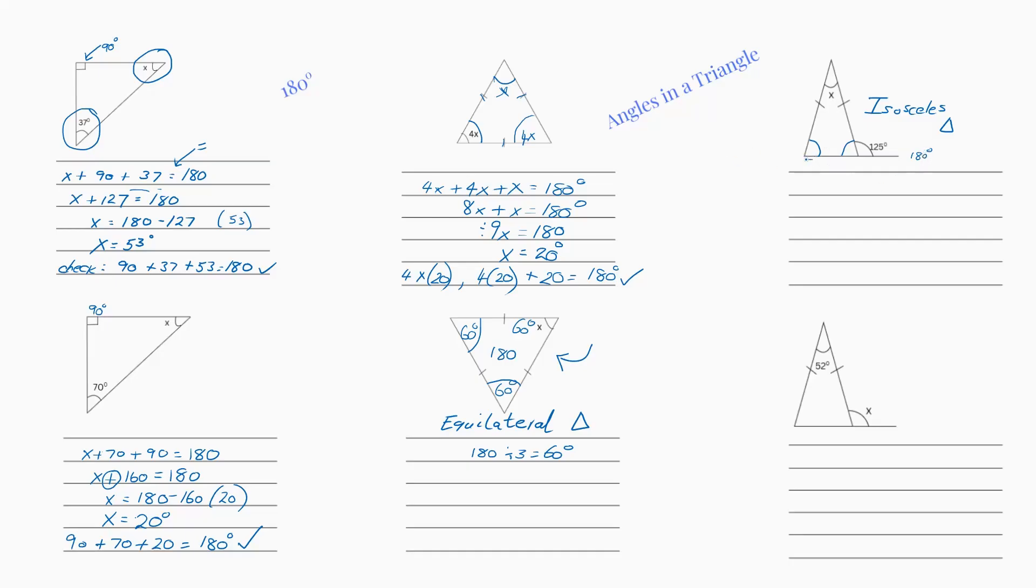So because we know that, we can work out this angle here. So I've got, we'll call it, call it y. So we've got y plus 125 equals 180. So now we have y equals 180, subtract 125, which will give you 55.